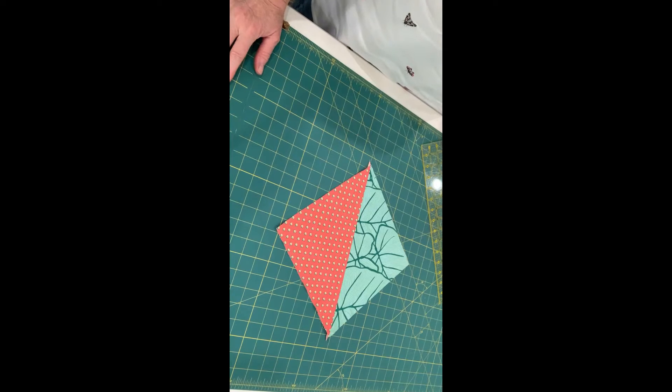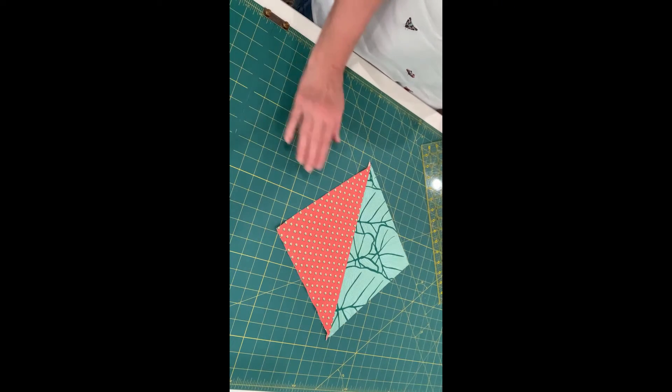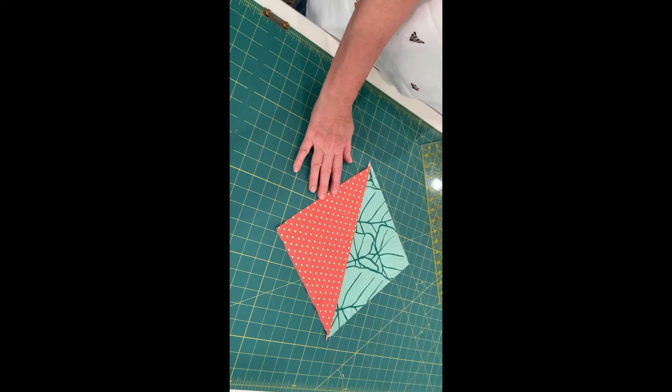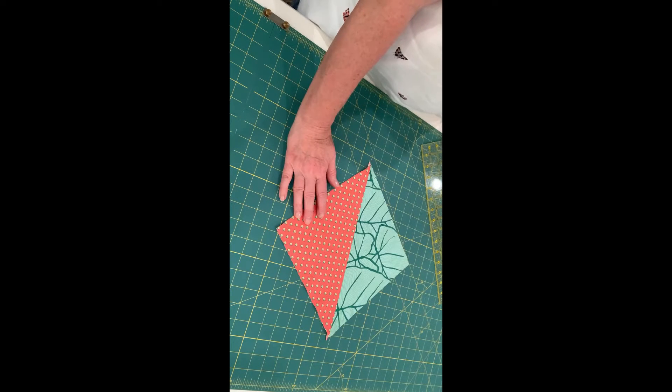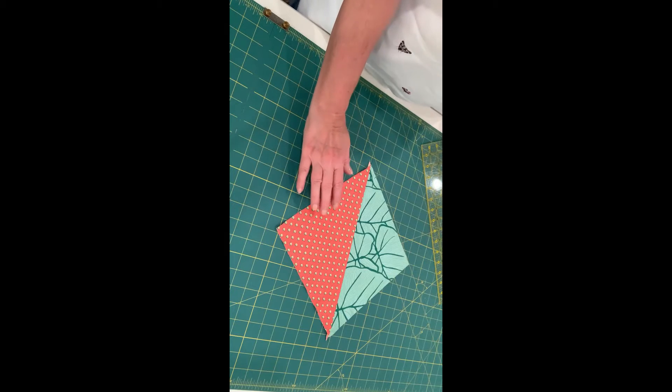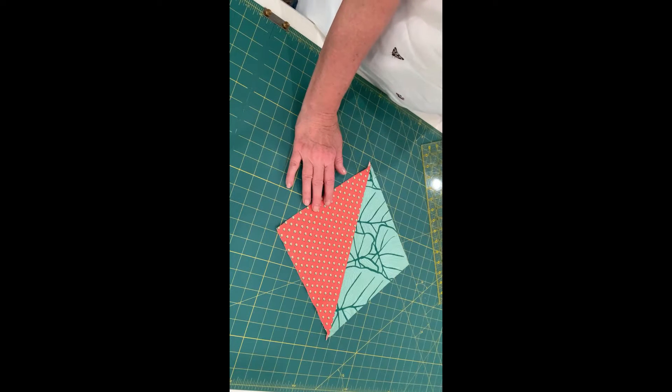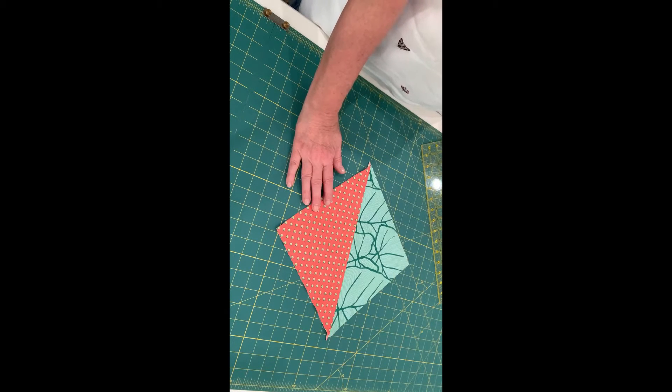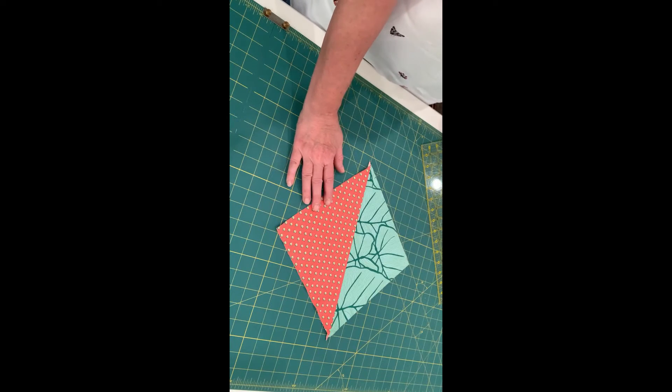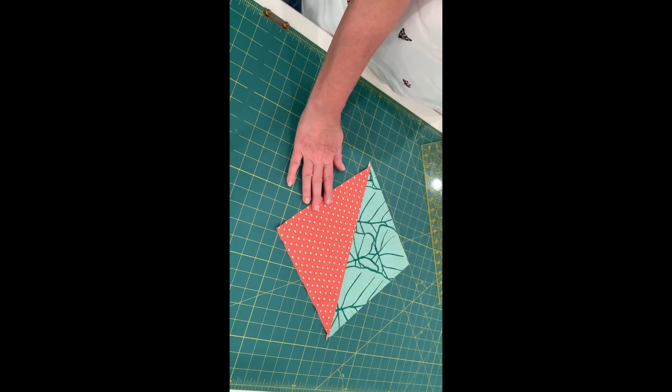The next thing I have done is pressed the triangle square open. This triangle square is going to be 9 1⁄2 inches square. In order to easily cut and trim the sides of the block, you need to have a ruler that is at least 9 1⁄2 inches.